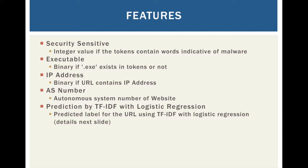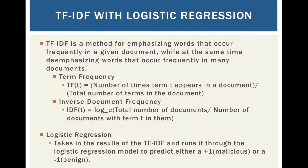This is a very common approach in natural language processing and document classification. TF-IDF is a method for emphasizing words that occur frequently in a given document, while de-emphasizing words that occur frequently across many documents. TF stands for term frequency — the number of times term T appears in a document divided by the total number of terms in the document. IDF stands for inverse document frequency — the natural log of total number of documents divided by the number of documents containing term T. Once we have the TF-IDF values, we input them into a logistic regression model, which gives us either +1 for malicious or -1 for benign. Using just TF-IDF with logistic regression on our training data, we got an accuracy rate of around 60 to 70%.